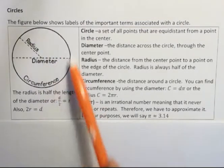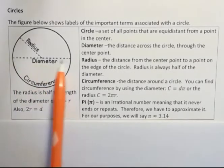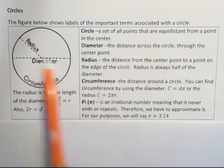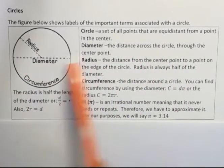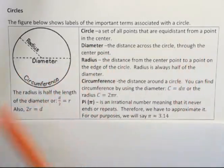The figure below shows the circle and all the important terms associated. The diameter, which you can see the definitions over here. The diameter is the distance across the circle through the center. But what is the circle in general? It's a set of all points that are equidistant from a point in the center.